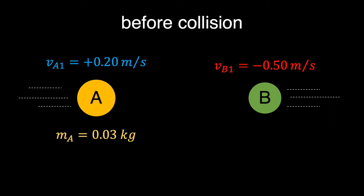On the other side, we have ball B going to the left with velocity of negative 0.5 meters per second. The velocity is negative because it is going in the direction of negative x-axis. Ball A has a mass of 30 grams and ball B has a mass of 10 grams.